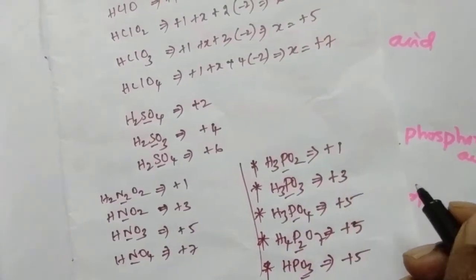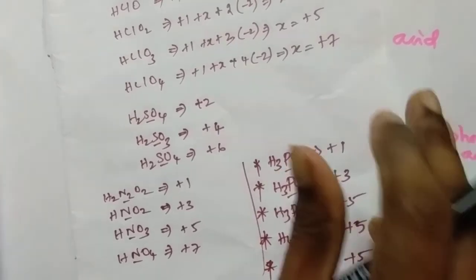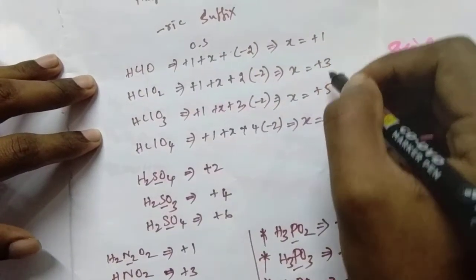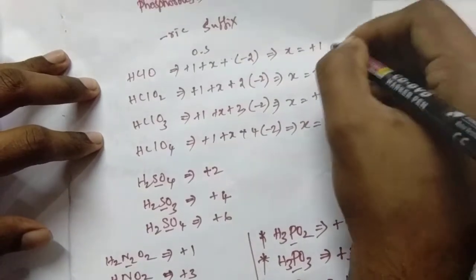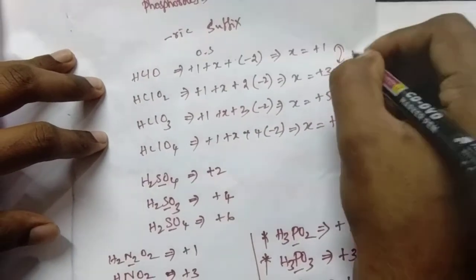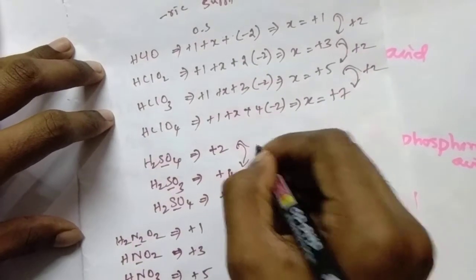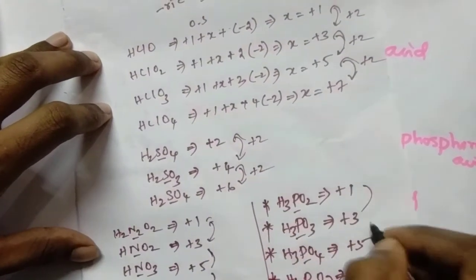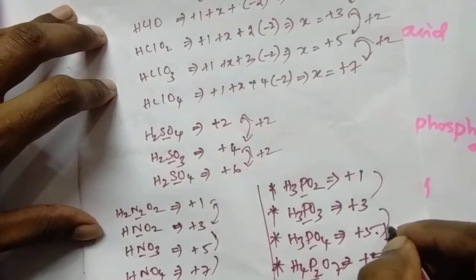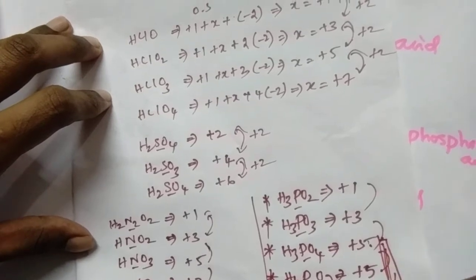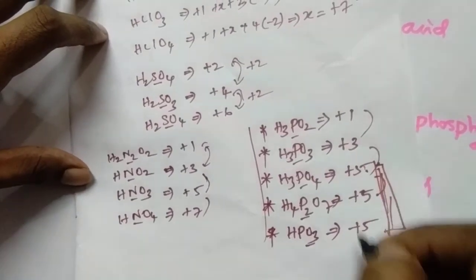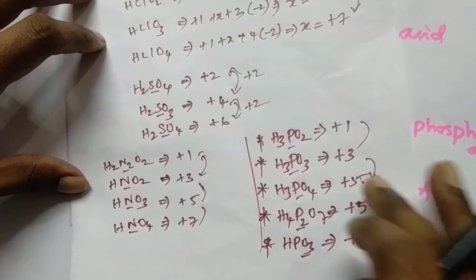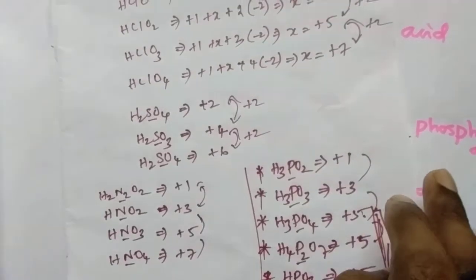Based on these oxidation states, you can see a pattern here: +1, +3, +5, +7 for chlorine; +2, +4, +6 for sulfur. Notice that three phosphorus oxy acids have the same oxidation state of +5. These three phosphorus oxy acids have the same oxidation state. Based on this, we can draw one graph or diagram.